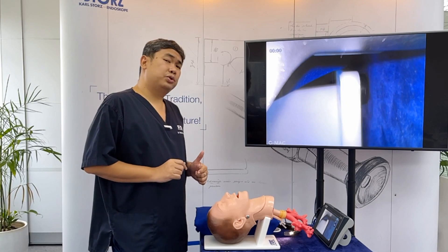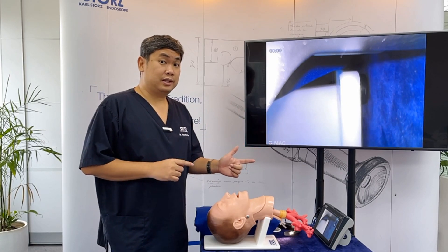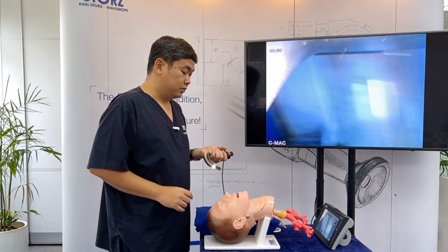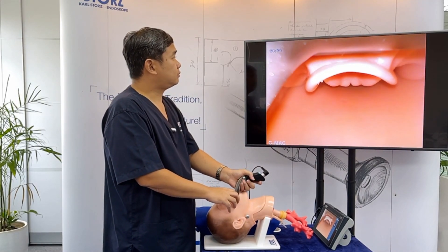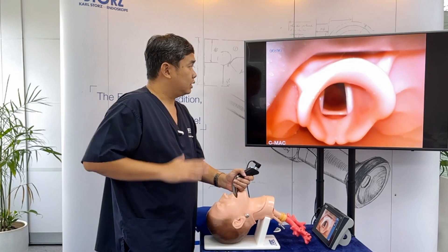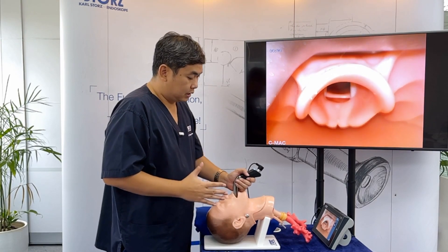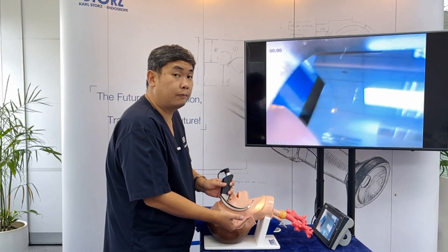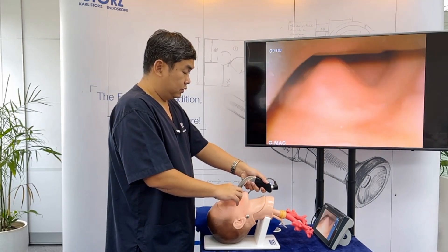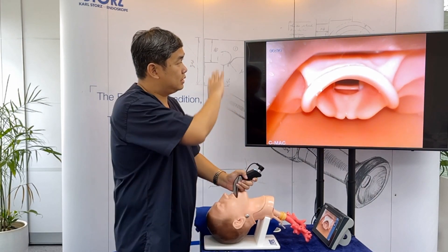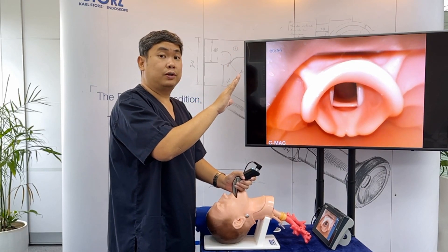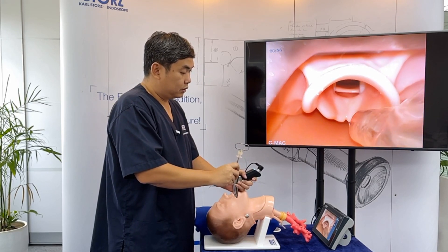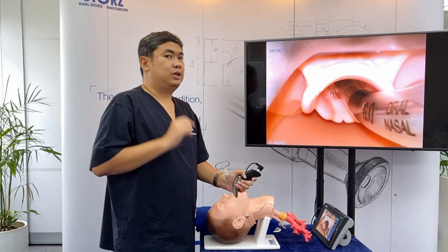Another technique is relaxing the hold on the video laryngoscope. Most of the time we want a good full view, but if you have a very anterior view, the tendency is for the video laryngoscope to point too anteriorly. You can relax your hand because you don't need the whole vocal cords view in order to intubate — a partial view of the vocal cords may actually equate to easier intubation.